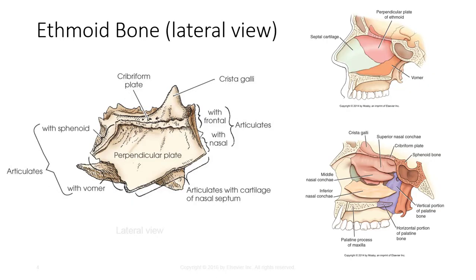The horizontal portion is called the cribriform plate and can be seen in the lateral view. The cribriform plate contains numerous foramina for transmission of olfactory nerves. The crista galli, seen in anterior and lateral views, is a conical projection at the anterior midline of the cribriform plate.